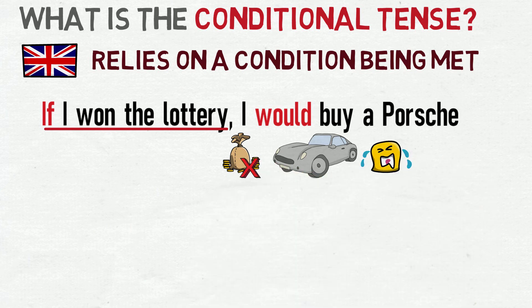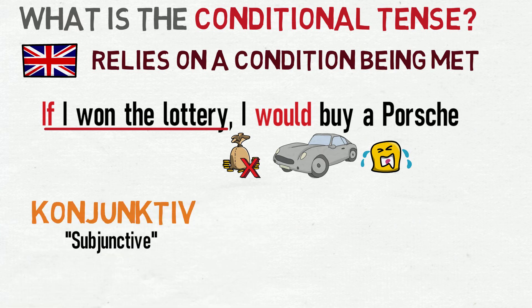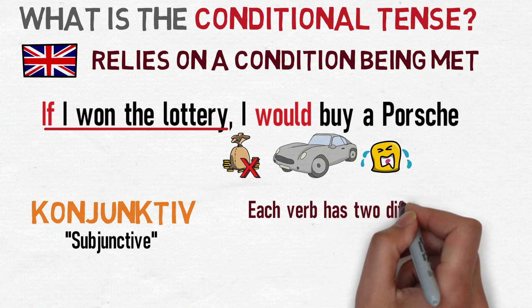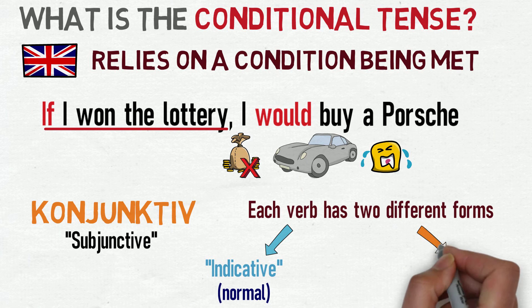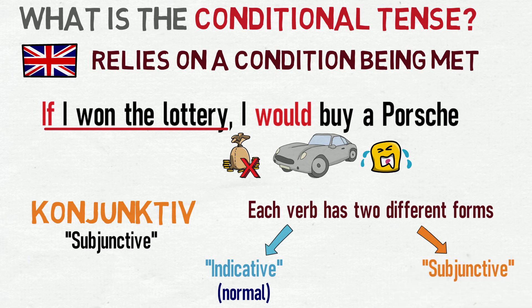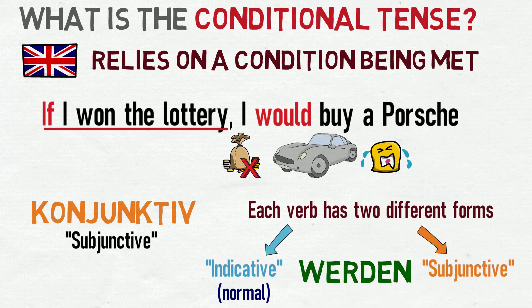In German, to form the conditional tense, we use something called the subjunctive, which is called Konjunktiv in German. There are a lot of complex aspects to the subjunctive in German, but I'll try to give you a simple explanation of what you need to know. Each verb in German has an indicative — i.e. a normal — and a subjunctive form. The verb we're interested in here is werden, meaning 'to become'.